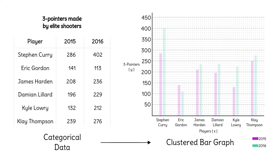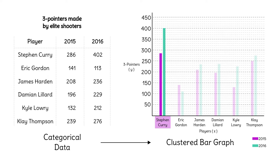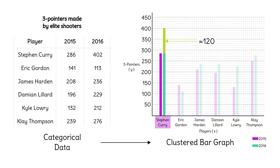Did all the players improve from 2015 to 2016? All except Eric Gordon. Who improved the most? Steph Curry, who was already the best in 2015. About how much was his improvement? We count 50 here, 50 here, and about 20 here — Steph Curry improved by about 123 three-pointers.